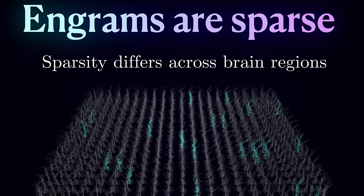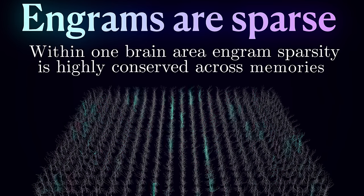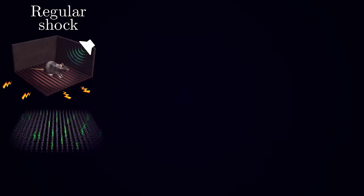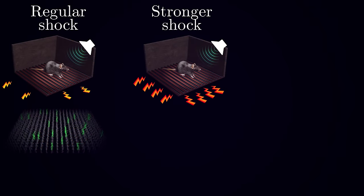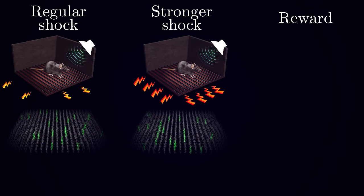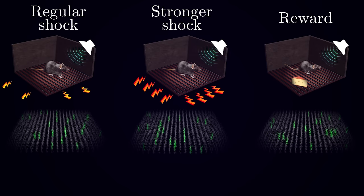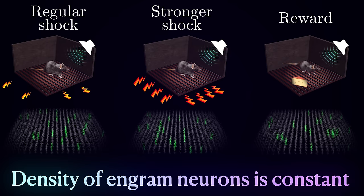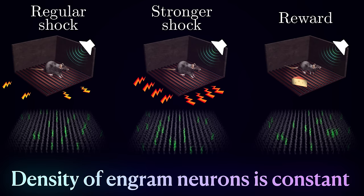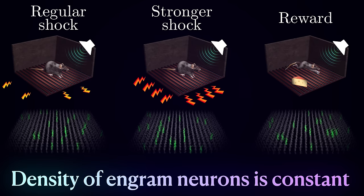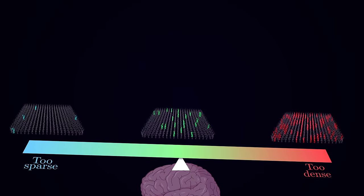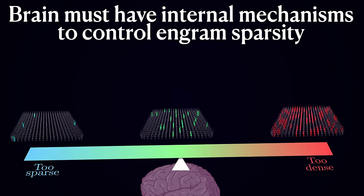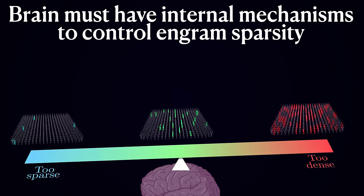Perhaps a more exciting and counterintuitive observation is that within one brain area, the sparsity is highly conserved across different memories. For example, changing the strength of the stimulus in the conditioning task and even changing the memory content, for example from fear to reward, doesn't affect the engram size. It's compelling to think that more vivid memories after a stronger shock would have larger engrams with more neurons encoding for it, but that's just not the case. This suggests that there must be some internal mechanisms that keep the engram sparsity constant, controlling the proportion of neurons that become allocated to storing each memory.